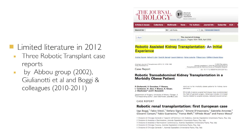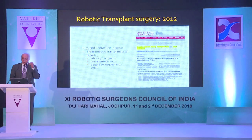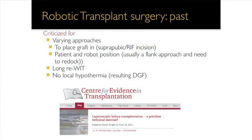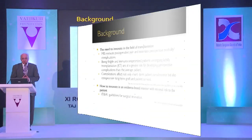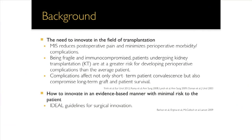One attempt was through an open wound, another was vascular anastomosis only, and in the third they redocked in different positions — very limited information, no real attempts. The question that came to mind was: why is it that people have not been trying? The background to developing this new procedure was the need to innovate in the field of transplantation, since the open procedure has its own catalogue of complications.